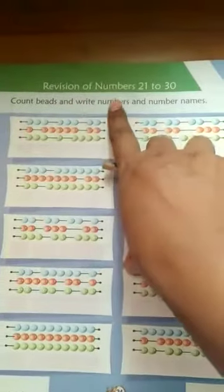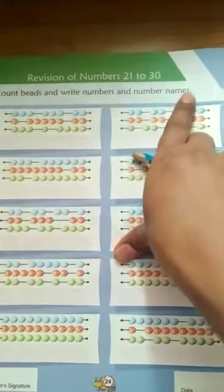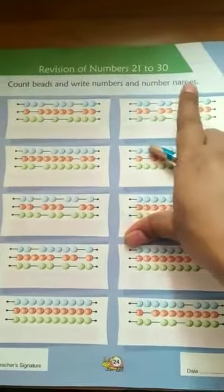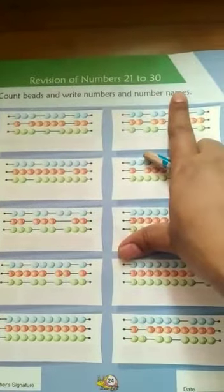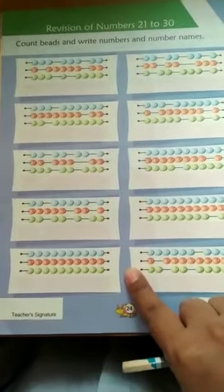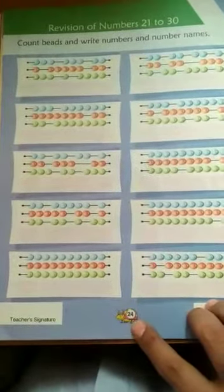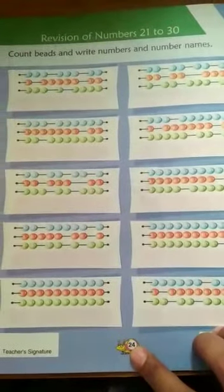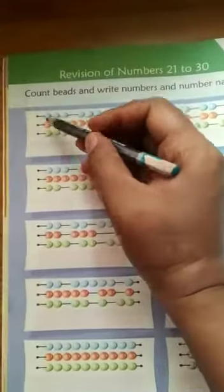Count the beads and write the numbers and number names they have given here, but you will not be writing the number names. Only counting the number you will be doing in this book, page number 24.